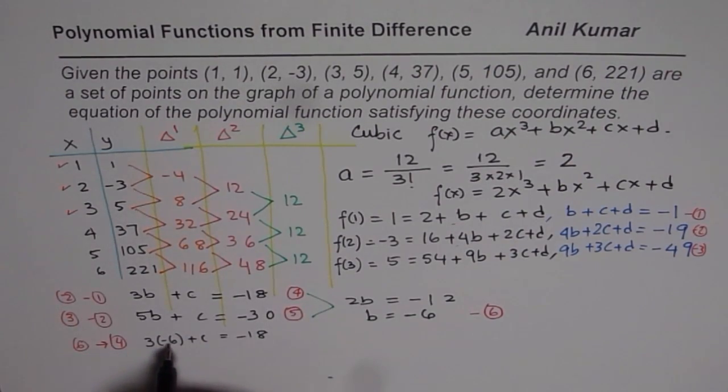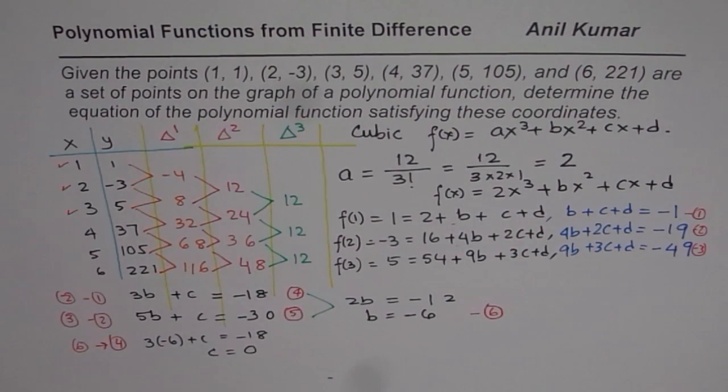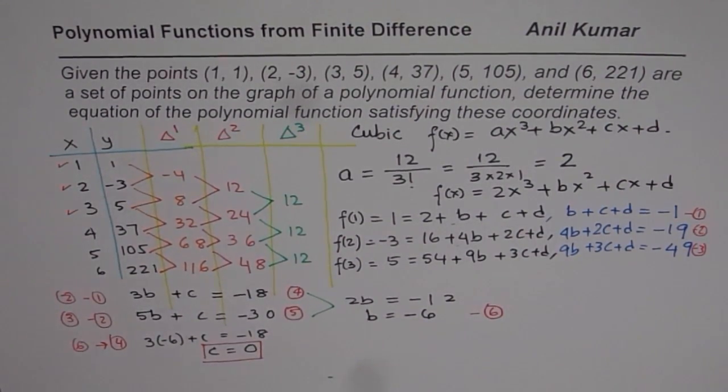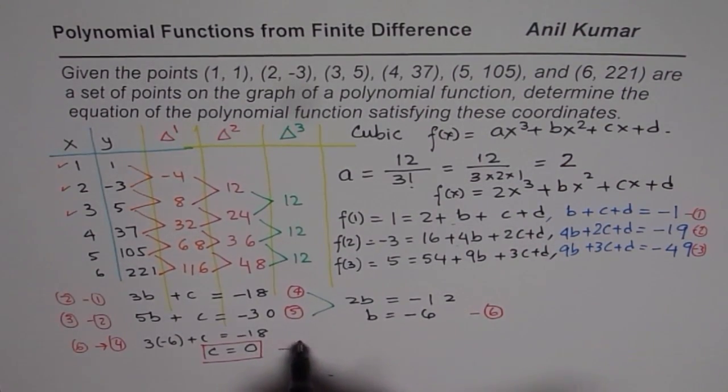And that is also -18. So I get c equals 0. So we get c equals 0. And I am calling this as my equation 7.